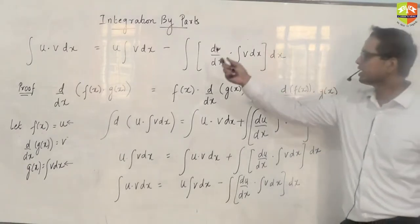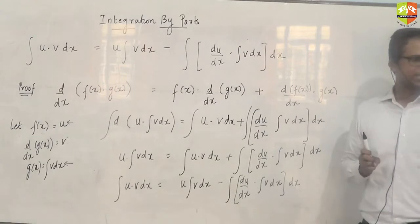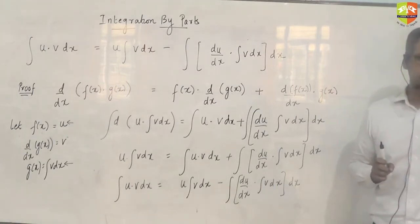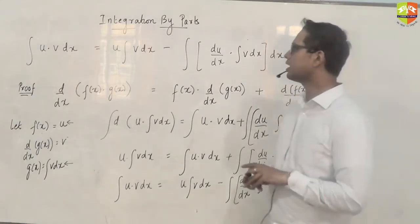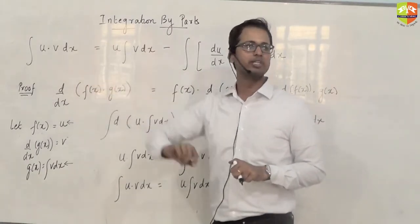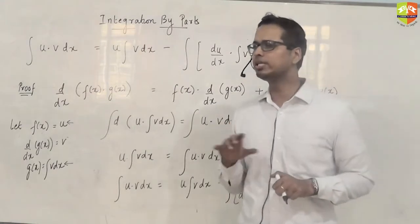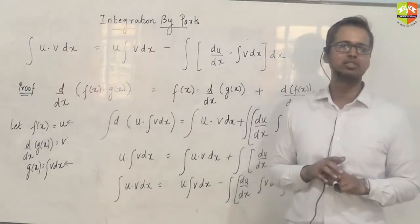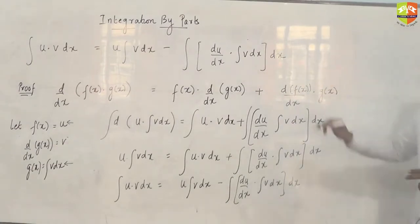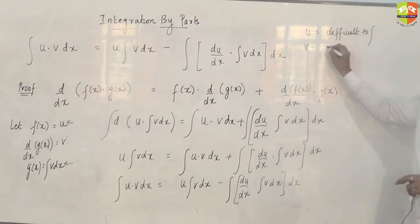If you look at this formula carefully you would realize that it is always the V function which goes integration. u never undergoes integration. u is either u or differentiated and V is always getting integrated. That means you should always choose u as that function which is difficult to integrate, and V as that function which is easier to integrate.